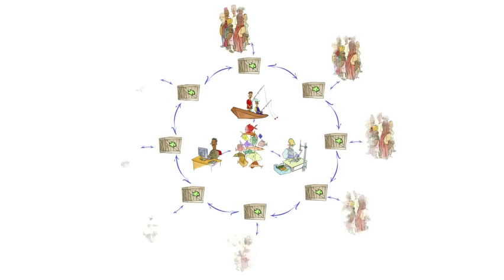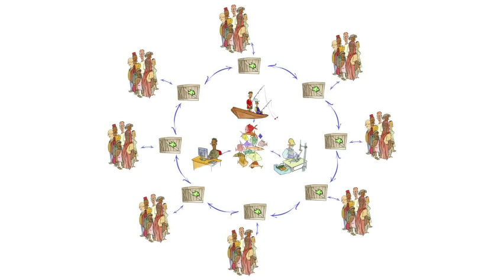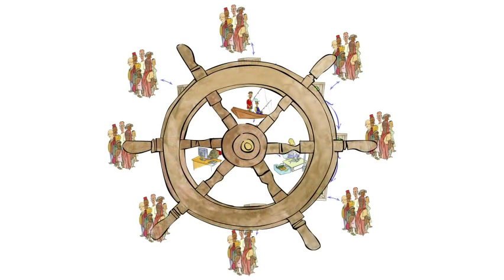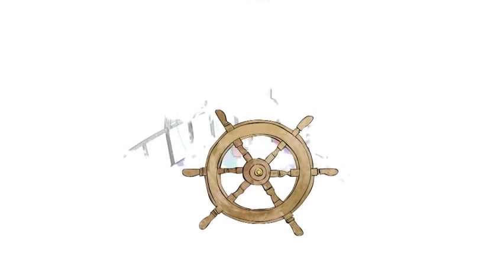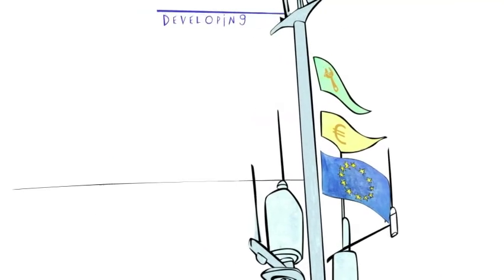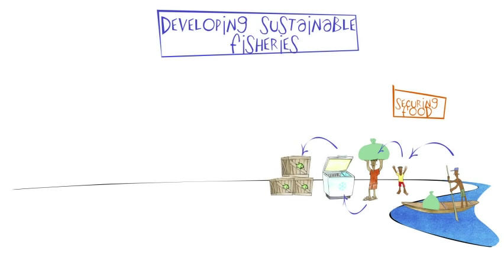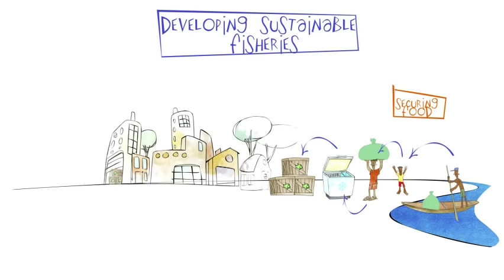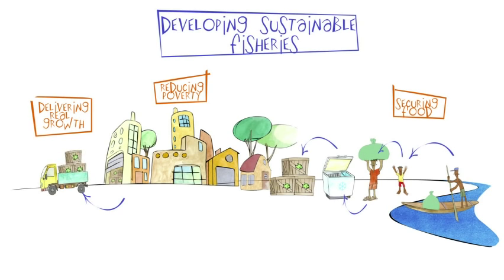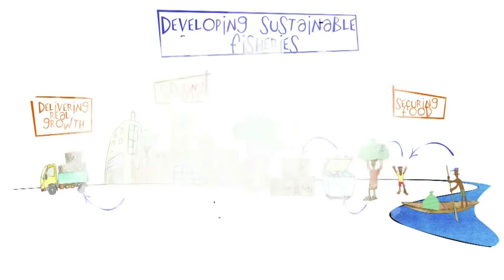Central to this is increasing the capacity of communities to control, protect and trade their local resources sustainably. The EU is therefore supporting people around the globe to better manage their fisheries and aquaculture, securing food, reducing poverty and delivering real growth that is sustainable and inclusive.